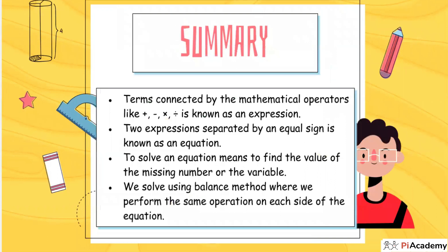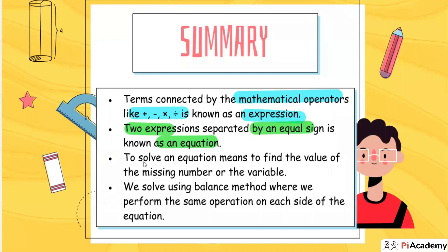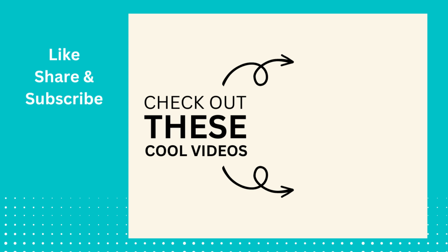Summary: Terms connected by mathematical operators like plus, minus, multiplication, and divide are known as an expression. Two expressions separated by an equal sign form an equation. To solve equations we find the values of the variables using the balance method. That's it for today's class — thank you everyone, I hope you enjoyed it.